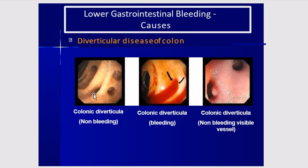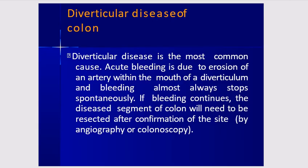Diverticular disease causes bleeding due to erosion of an artery within the mouth of a diverticulum, and it almost always stops spontaneously. If bleeding continues or is recurrent, the affected bowel segment needs to be resected, ideally after confirmation of the site by angiography or colonoscopy.